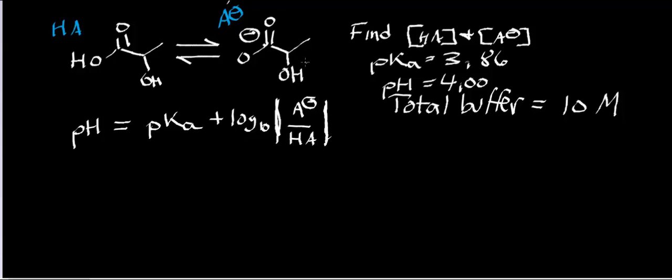We're going to deal with the same conjugate acid and base. The conjugate acid is going to be lactic acid, and the conjugate base will be lactate. The pKa hasn't changed, so it's basically the same problem, except in this case we're going the reverse direction. We want to make a buffer at pH 4. The pKa is 3.86, and we're asked to find the concentrations of HA and A-, the conjugate acid and base.